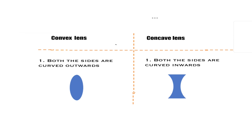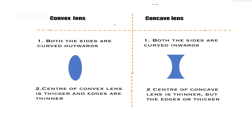Coming to the second point. On observing the figure, we can make out the center of the convex lens is thicker than the edges. Whereas in the concave lens, the center is thinner and the edges are thicker than the center.